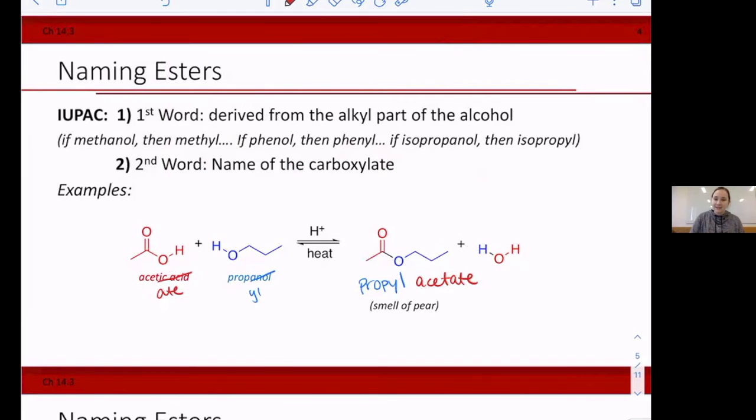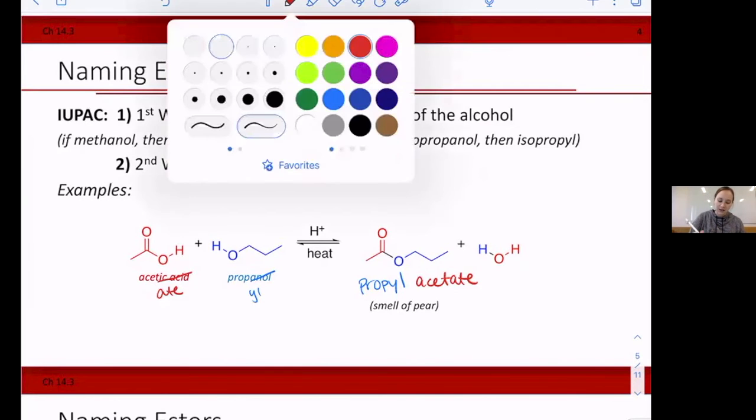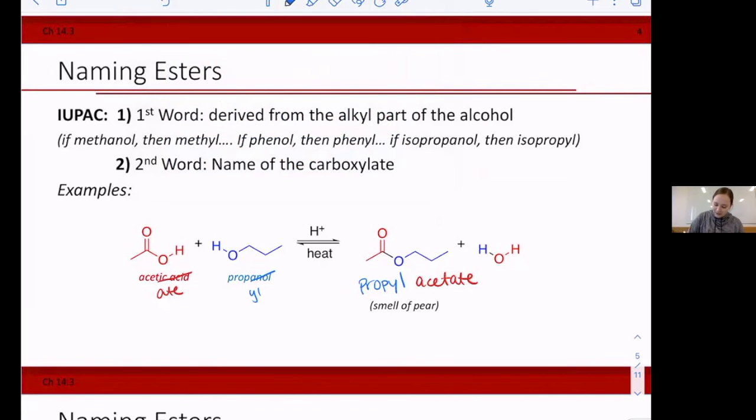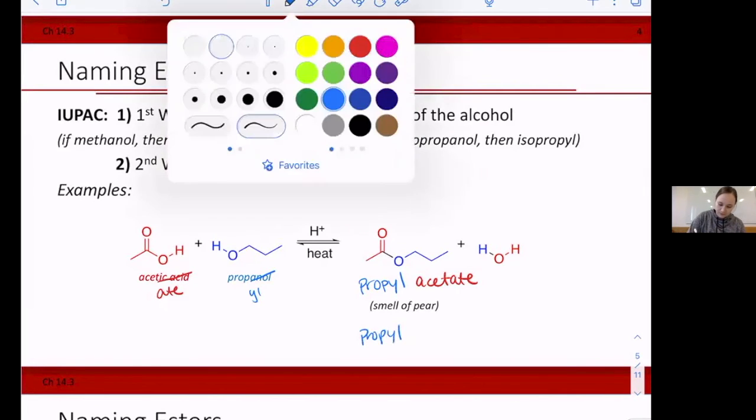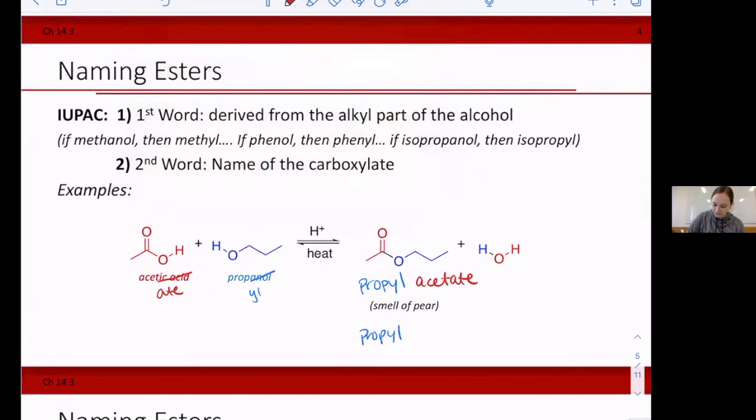So that is technically the common name, right? Because acetate or acetic acid is the common name for a carboxylic acid with two carbons. So the other way you could say this is propyl ethanoate. And then additionally, this molecule is the smell of pears. So propyl acetate is pears.